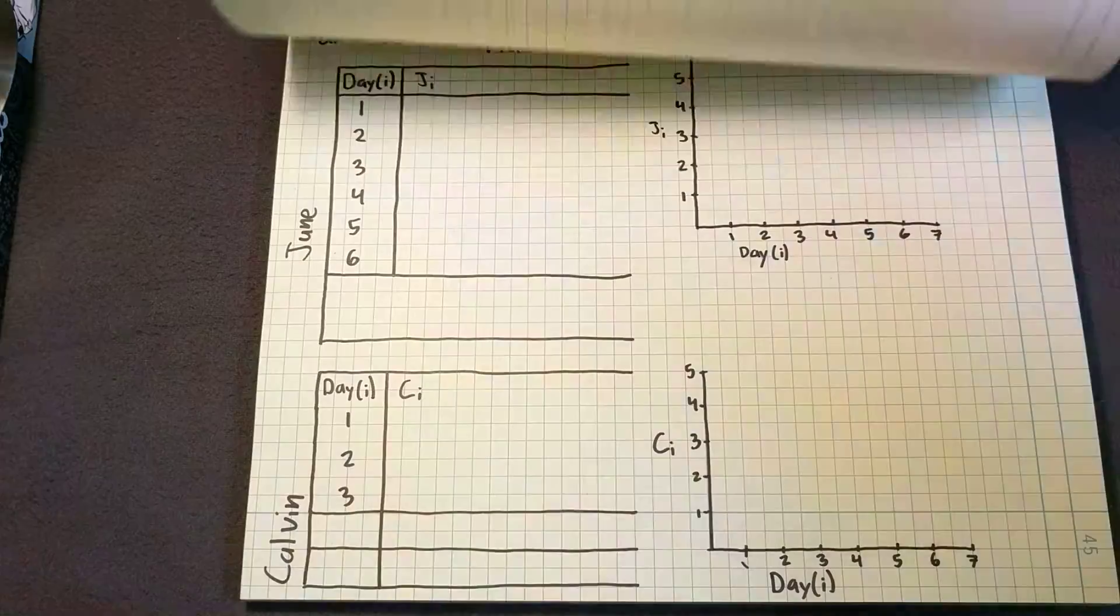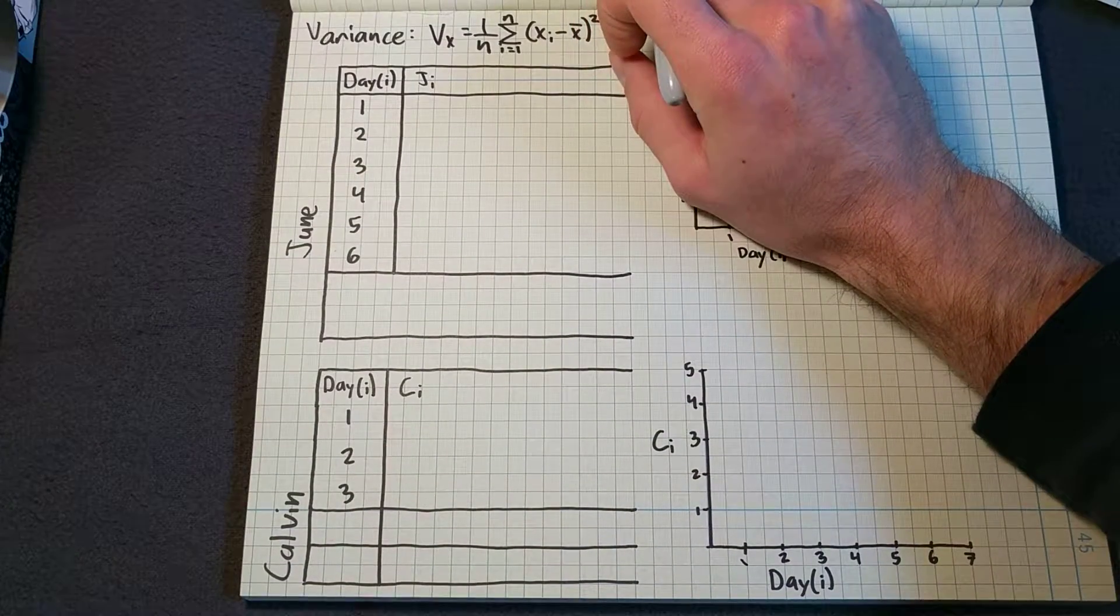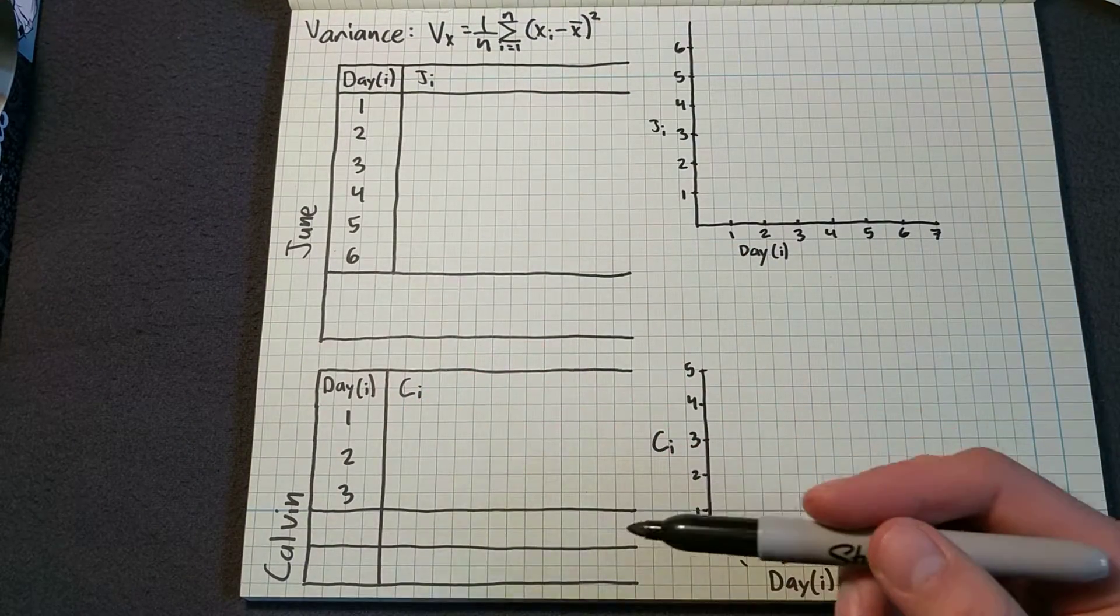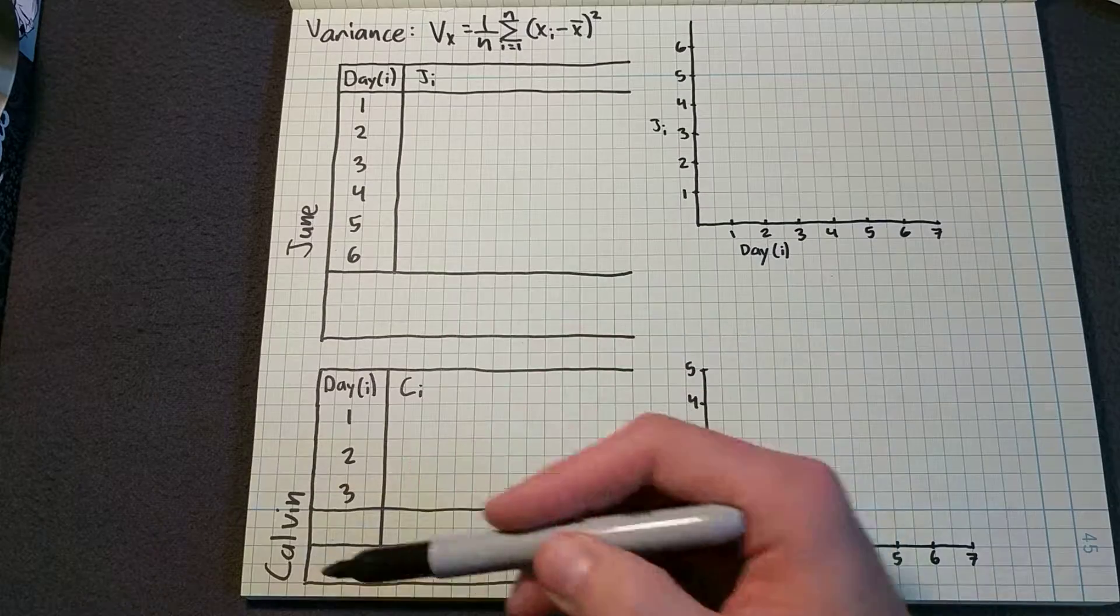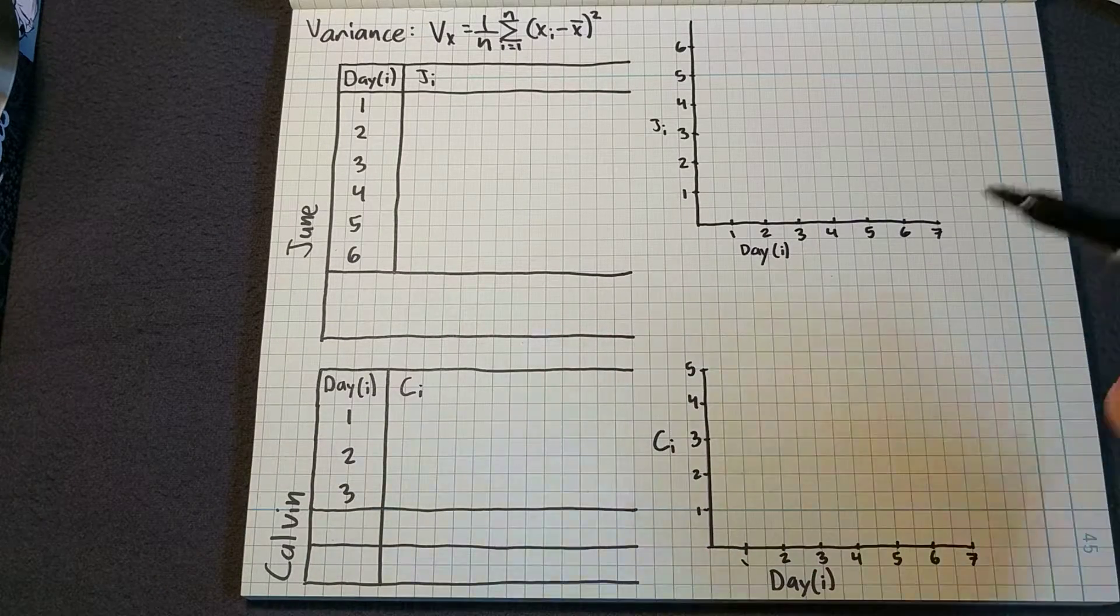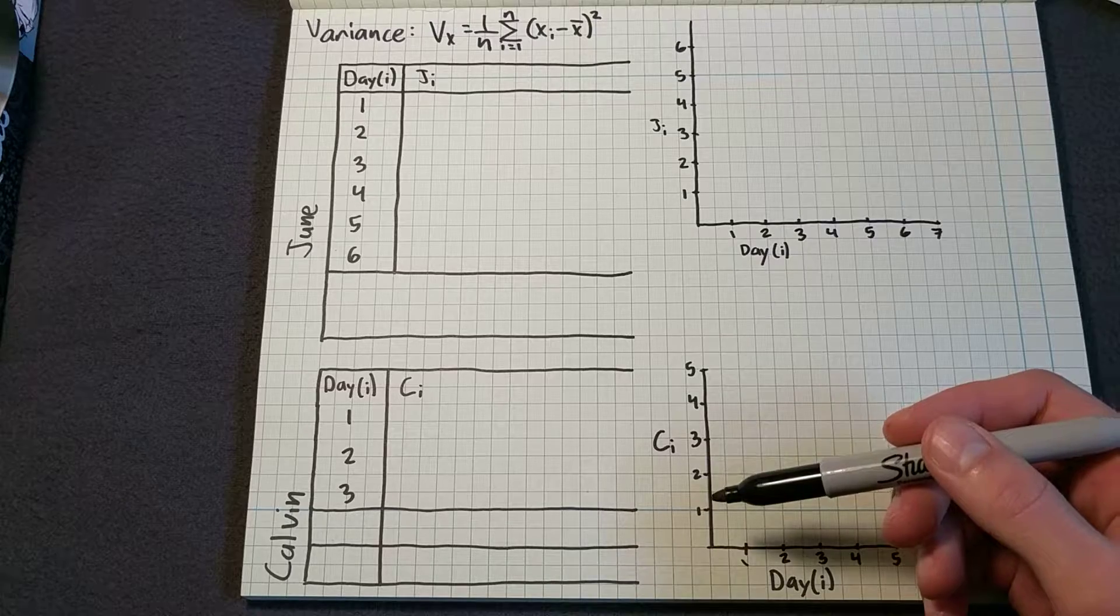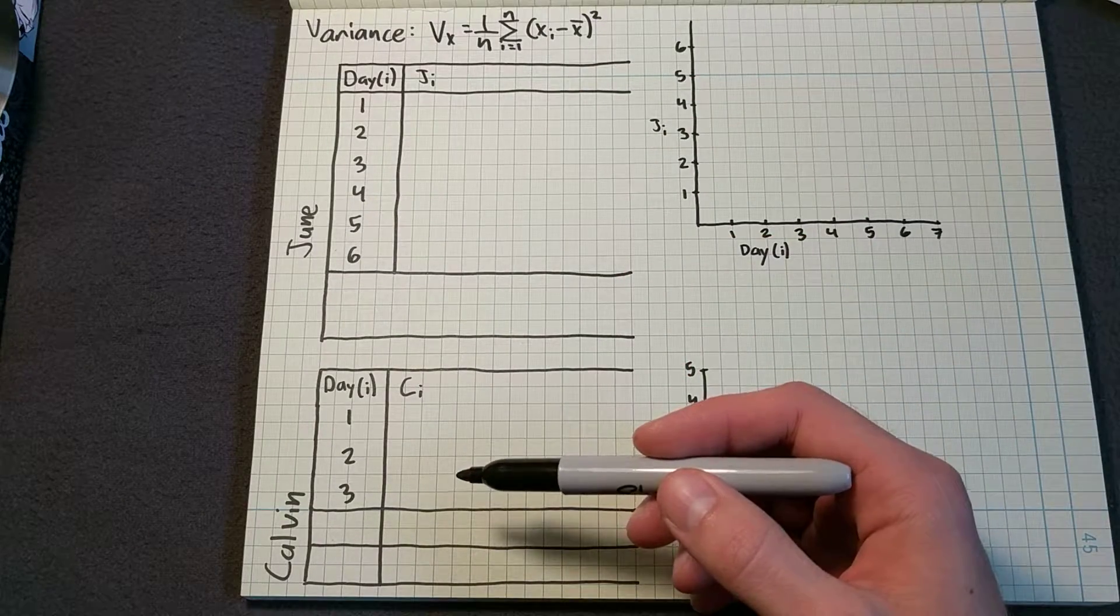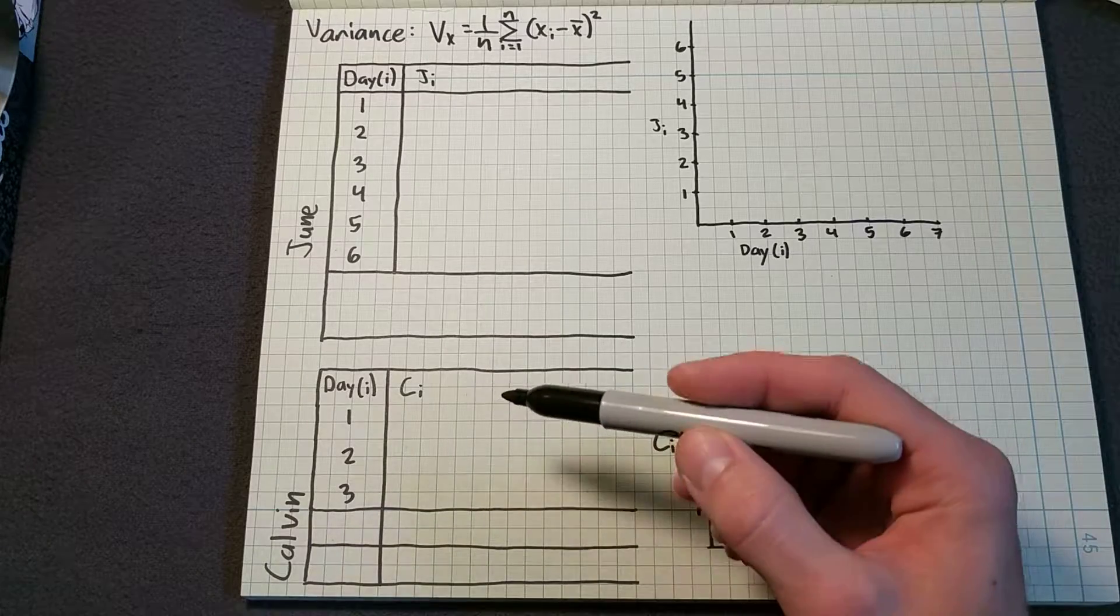So I have a puppy named June and I have a kitten named Calvin. And I want to know how much June and Calvin eat on average per day and how sporadic their eating habits are. So I'm going to measure how much they eat over six days and then use that to find the average and the variance.